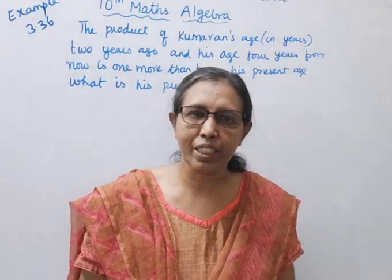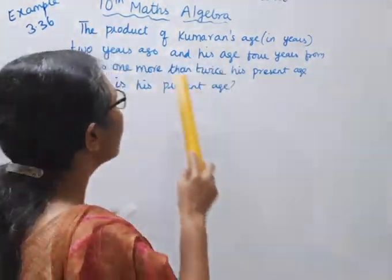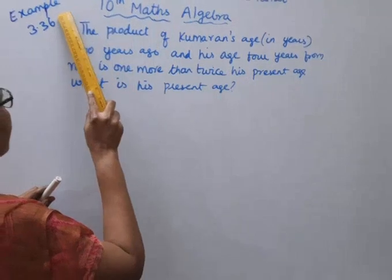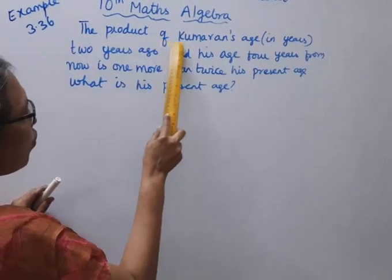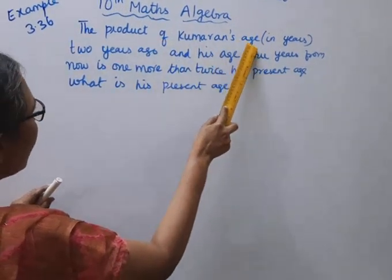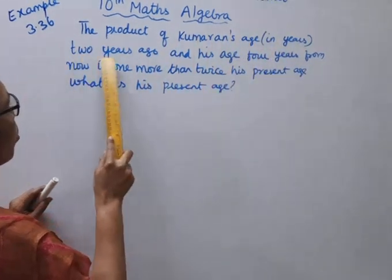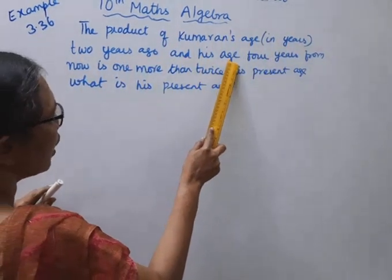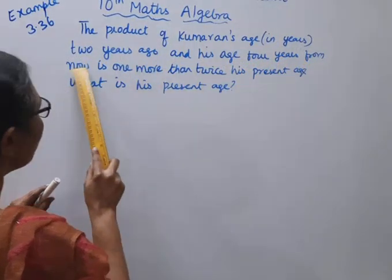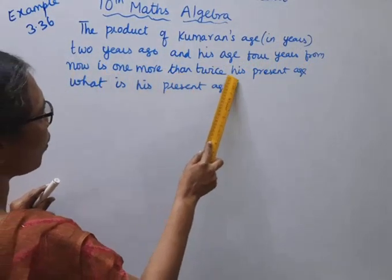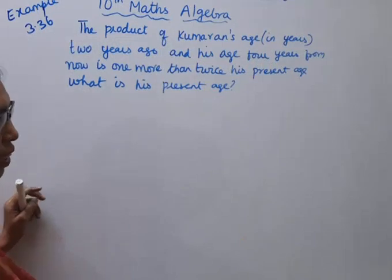Hello students, welcome to Max and Tamil channel. Today we have Algebra Example 3.36: The product of Kumaran's age in years, 2 years ago, and his age 4 years from now is 1 more than twice his present age. What is his present age?